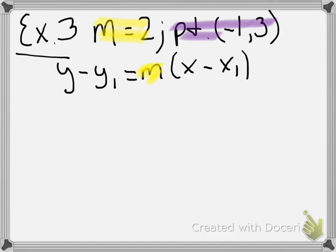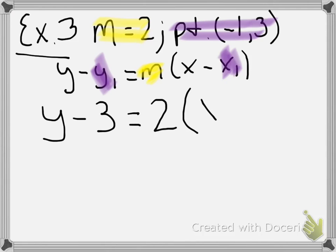We're going to take the slope of two, and we're just going to plug them in like we were doing before. So we get y minus three equals two times the quantity x minus negative one. I'm immediately going to turn that double negative into a plus positive one. Now, that's point-slope.